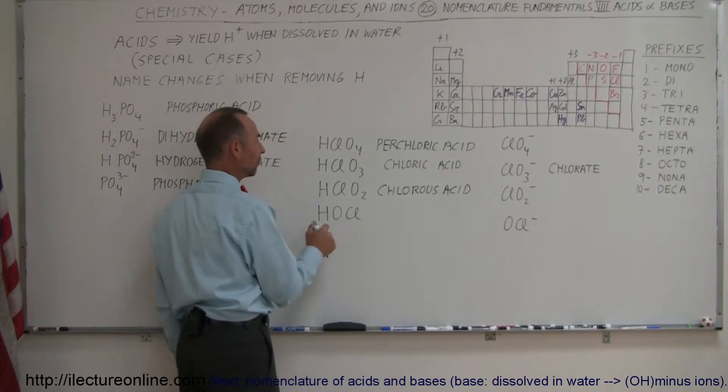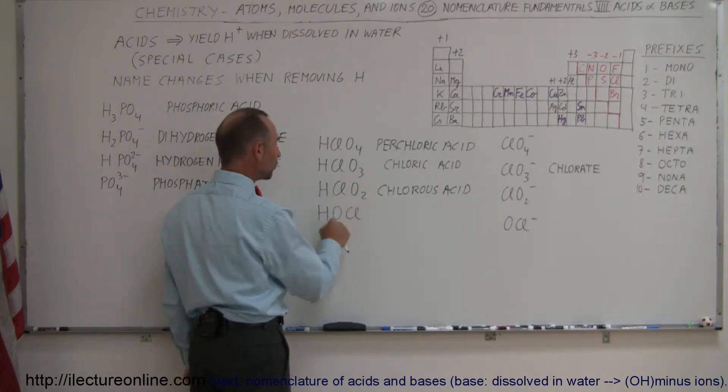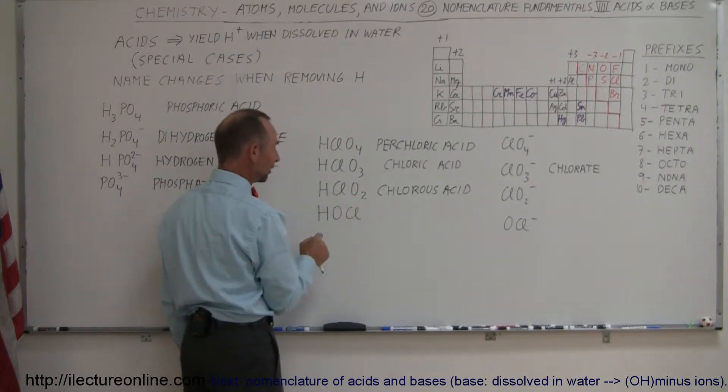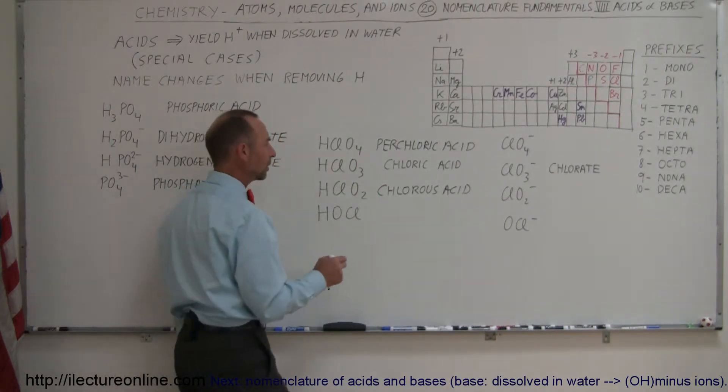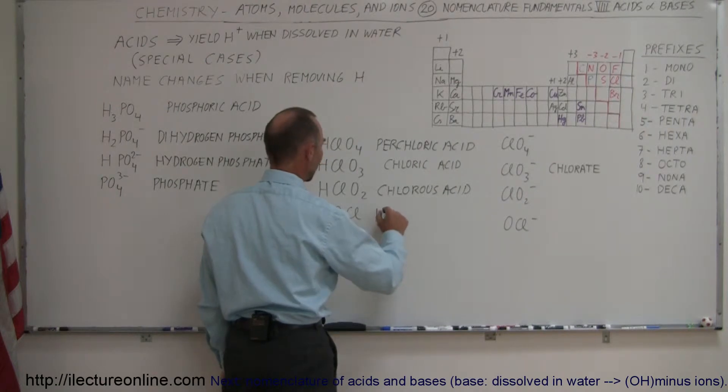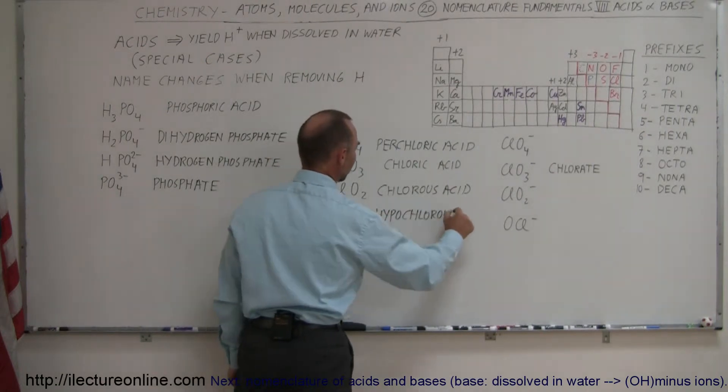And here we have one oxygen removed again. Of course the name is written a little bit different. This is the more common way of writing HOCl. We put the hypo in front of it. So this is called hypochlorous acid.